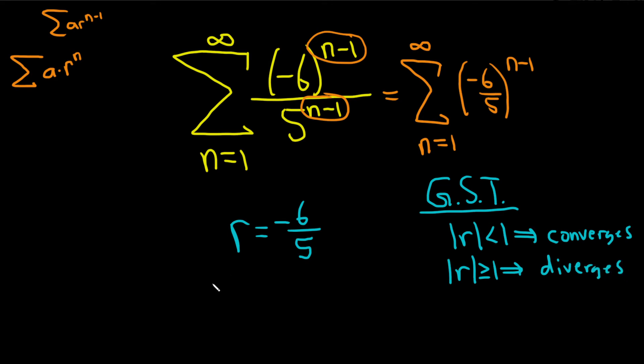So here if we take the absolute value of r we're really taking the absolute value of negative 6 over 5, and that just makes it 6 over 5 which is certainly greater than or equal to 1. It's bigger than 1 but we can write greater than or equal to as well.